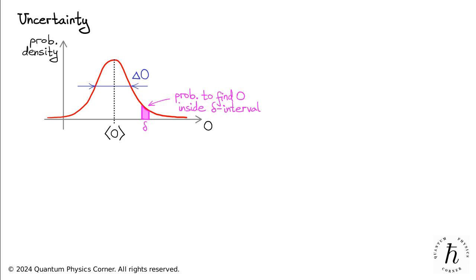There are different mathematical approaches to measuring the width of a distribution. The one most commonly used in quantum mechanics is based on the standard deviation, which in the terminology of quantum mechanics is referred to as uncertainty.